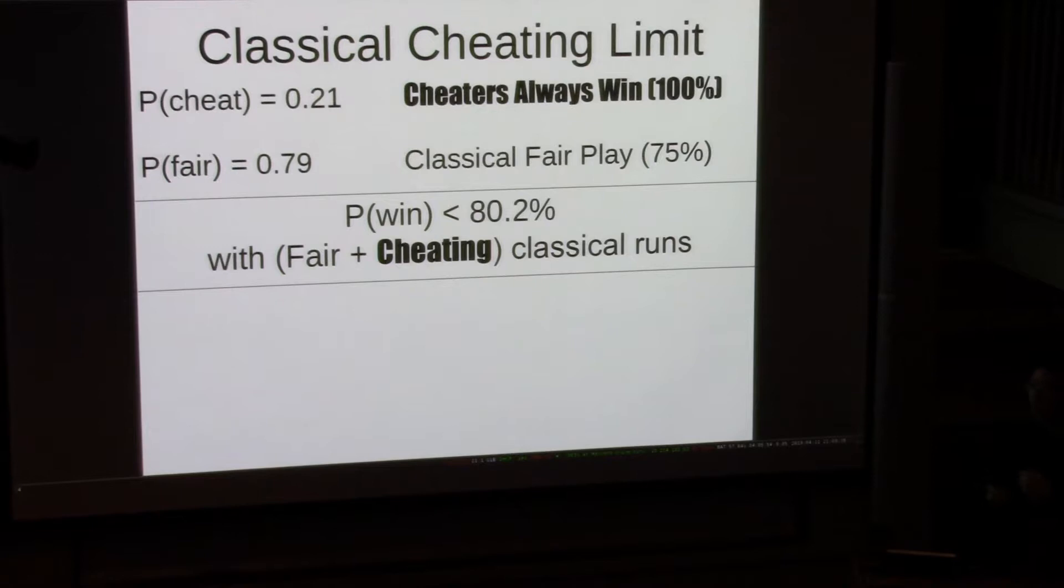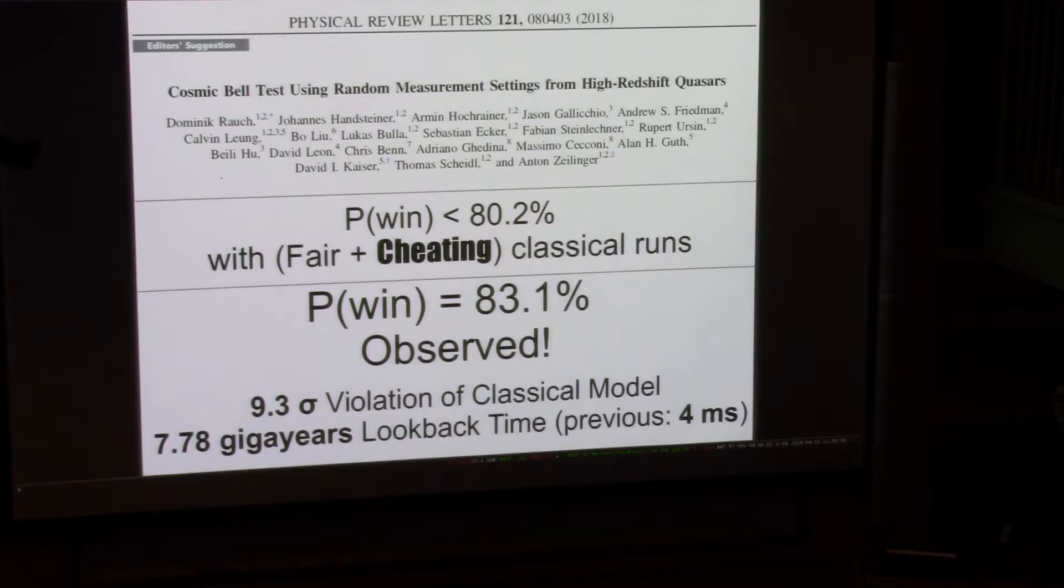From all of our measurements we can sort of deduce that of the photons entering each of our random number generators, 14% of them are local on Alice's side and 60% of them are local on Bob's side. We play this game about 100,000 times with 100,000 different pairs of entangled photons. We observe an 81.3% win rate, which is unexplainable, even if we allowed every single locally-flipped quarter to contribute to that Alice predicting Bob's quarter mechanism. This is in tension with classical physics at a significance of nine sigma.